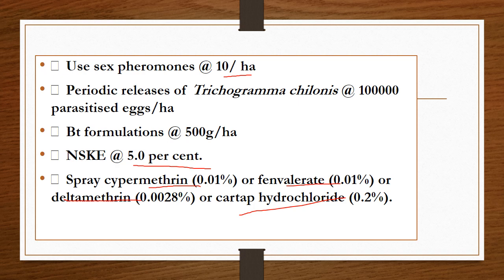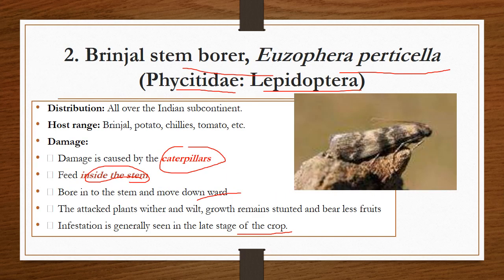Coming to the chemical management: spray any of the chemicals such as Cypermethrin, Fenvalerate, Cata Hydrochloride, or Deltamethrin — these effectively control the pest.